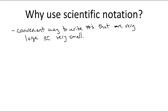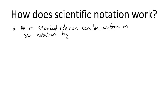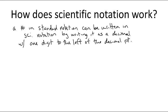So how does scientific notation work? Okay, so a number in what we call standard notation can be written in scientific notation by writing it as a decimal with one digit to the left of the decimal point followed by a power of 10.